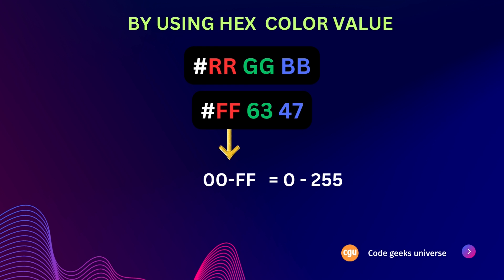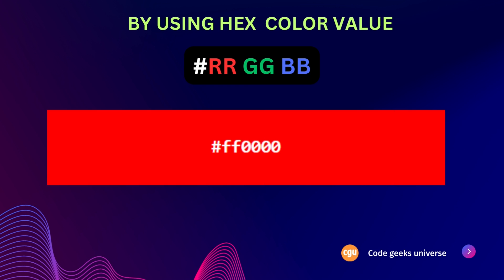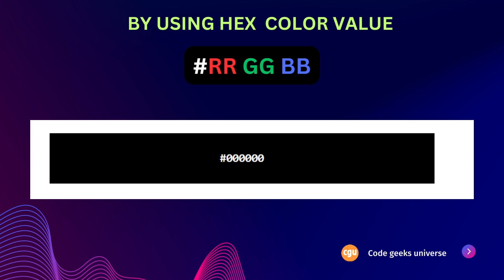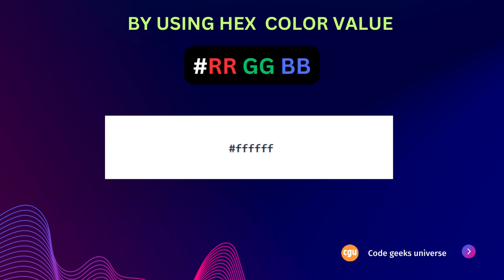Let's take an example to understand how colors are displayed in hexadecimal. The color red is represented by the code #ff0000, achieved by setting red to its highest value ff and green and blue to their lowest values. Black can be displayed by setting all color channels to zero, giving the hex code #000000. Similarly, white is achieved by setting all channels to their highest value ff, so the hex code for white is #ffffff.